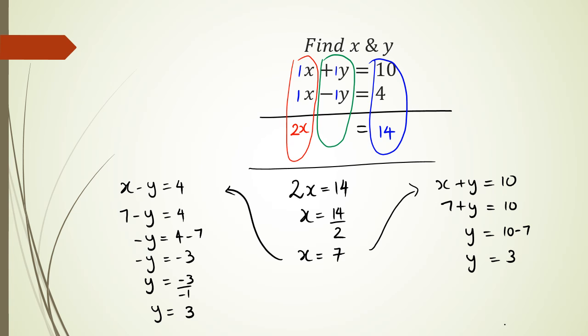One more example. In this example, we're going to do elimination again. But in the last one, we actually added the two equations. In this one, you'll notice that the two coefficients of x are 1. Therefore, subtracting it would be the best option in this case.